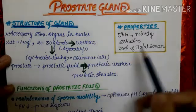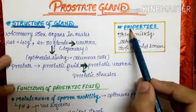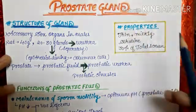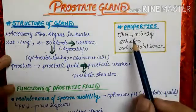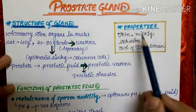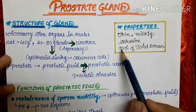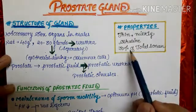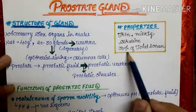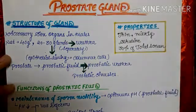Now let us learn the properties of the prostatic fluid. The prostatic fluid is a thin, milky, and alkaline fluid. It helps in the formation of 30% of the total semen.